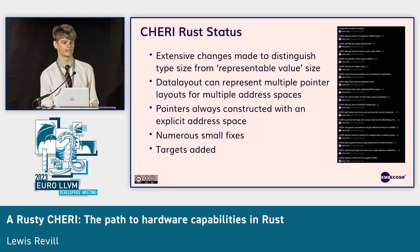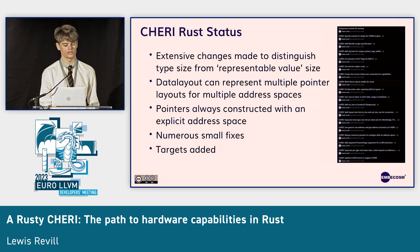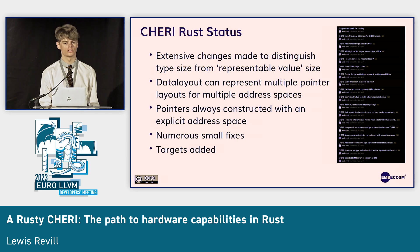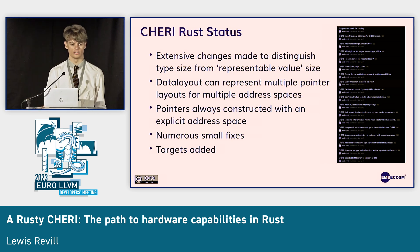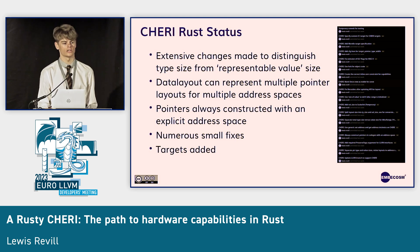What about Rust? This is what we've been working on at EmberCosm. I've made extensive changes to solve the problem of distinguishing the type size from the size of the representable value. We can now represent capabilities with different address spaces and different pointer layouts. There's also a refactoring of the front end to always construct pointers with explicit address spaces rather than using the same address space for all pointers, which will be especially useful for hybrid mode down the line. There are numerous small fixes to fix assumptions that broke for CHERI, and we've added CHERI-enabled targets like some Morello platform targets as well as a CHERI RISC-V target.